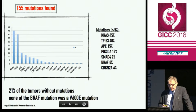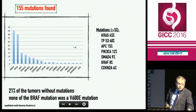Just one remark about BRAF mutation: we found no V600E mutation, and all the mutations found were in another codon.